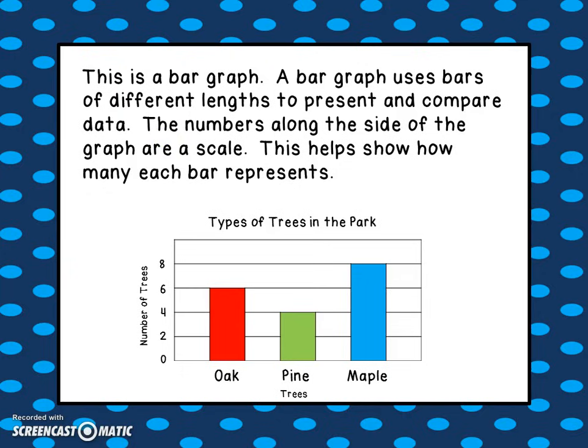This type of graph is a bar graph. A bar graph uses bars of different lengths to present and compare data. The numbers along the side of the graph are called a scale, and this helps show how many each bar represents. This particular graph is called Types of Trees in the Park — imagine somebody went out and counted the trees in the park and put it into a bar graph.